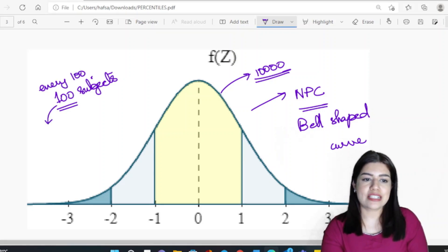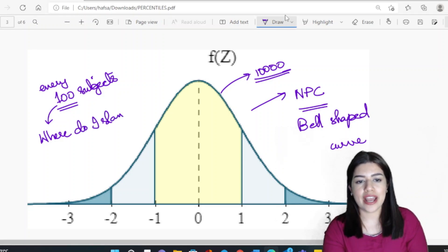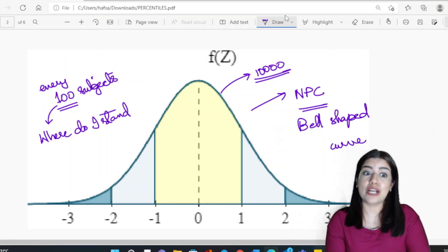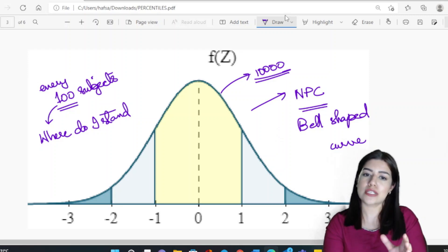For every hundred subjects, where do I stand? What does this mean? This basically means am I ahead of 80 people, 50 people? Am I doing better than a lot of people? Am I doing worse than a lot of people?